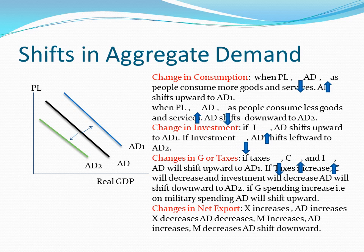Looking at the diagram, if you recall from microeconomics the simple demand curve — when the price level decreases, the demand curve increases or shifts upward; if the price level increases, the demand curve shifts downward. This is the same situation in macroeconomics, because macroeconomics is the study of the whole economy, and in that context we call this the aggregate demand curve.